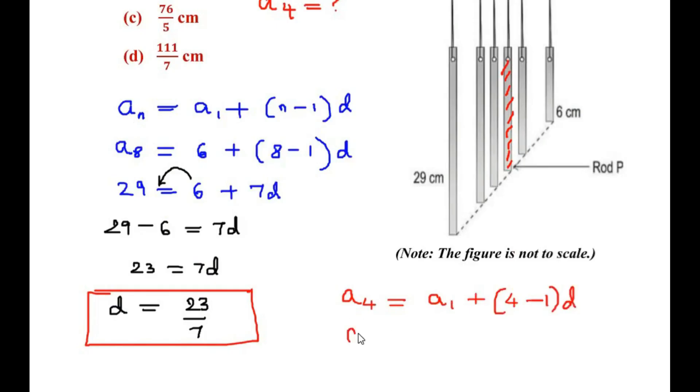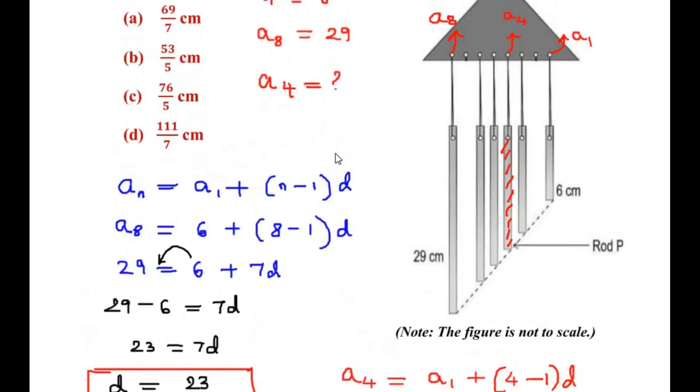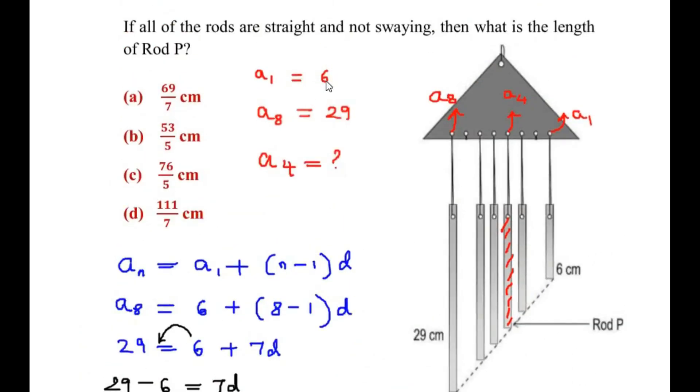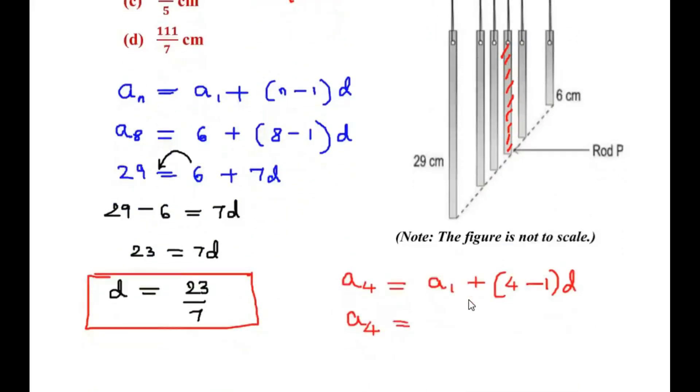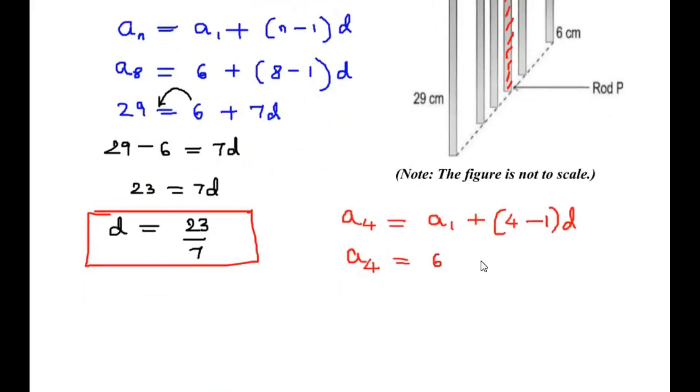Now since we have to find the length of the 4th term, we will write A4 equal to, the first term is the length of the first rod, so 6, that is right here 6 plus, 4 minus 1 is 3 and common difference we have got is 23 over 7.